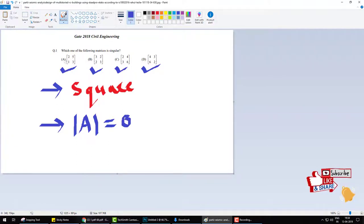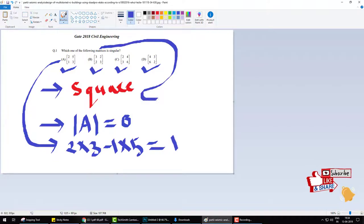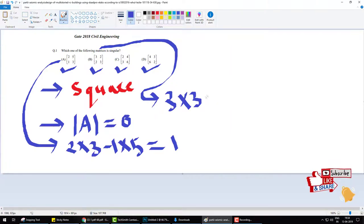If we remove the determinant of matrix A: 2 × 3 minus 1 × 5 is equal to 1. Second matrix ka determinant nikale to 3 × 3 is 9 minus 2 × 2 is 4, equals 5.